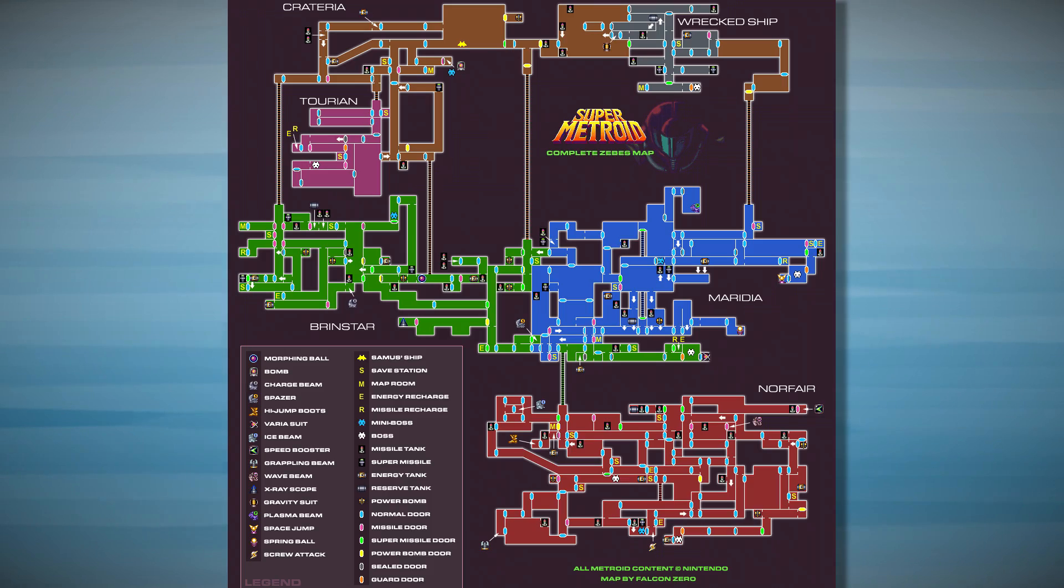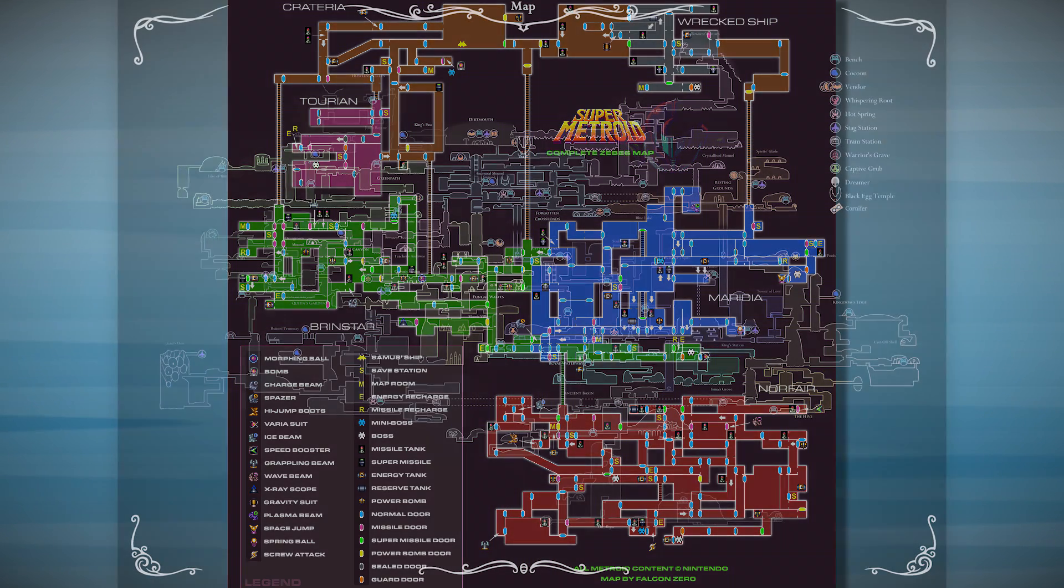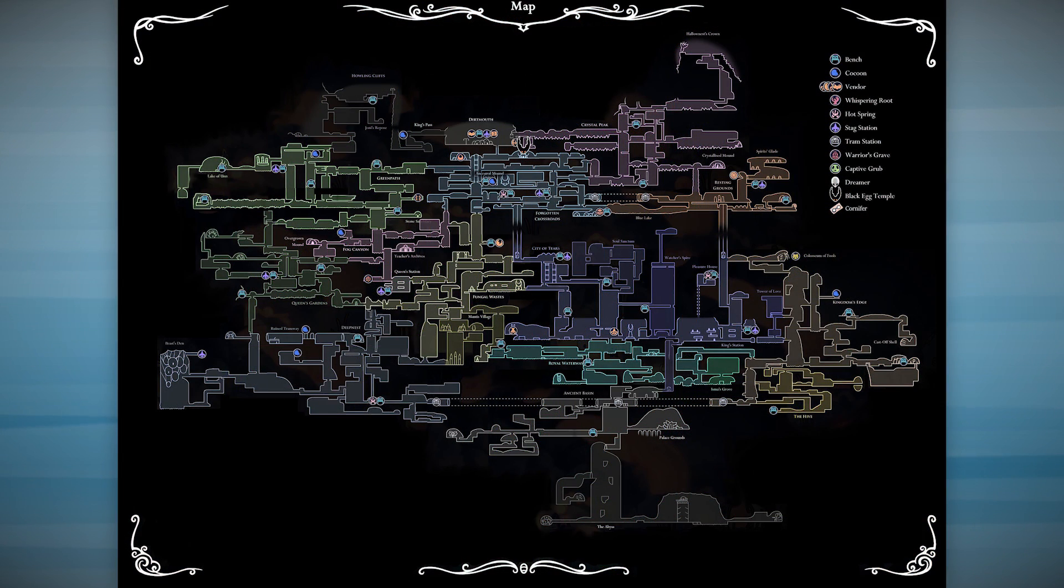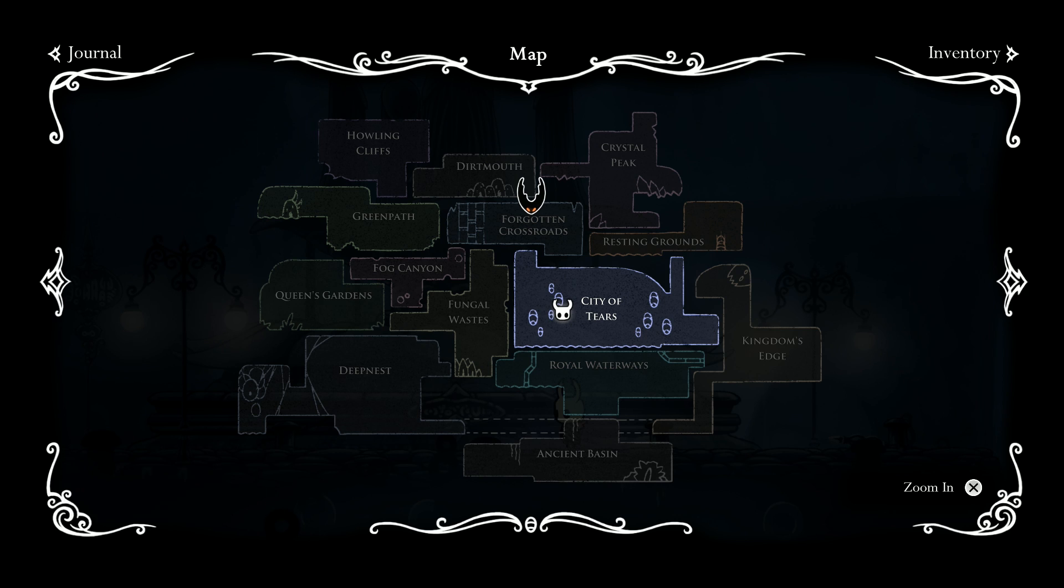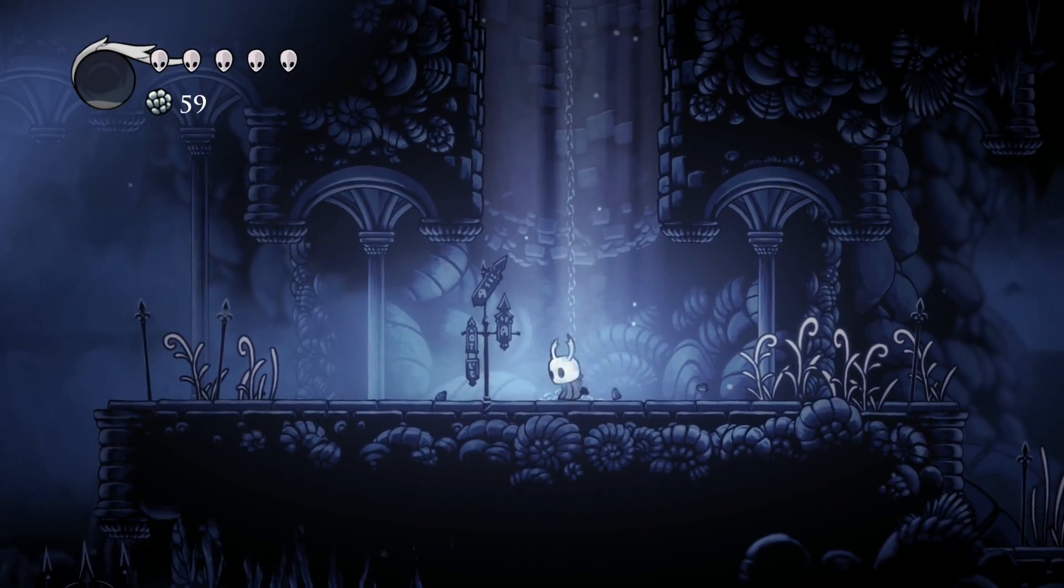One of the staples of Metroidvania-styled games are their large, sprawling, interconnected maps. Essentially, the game is all just one huge map. Sure, there are clearly defined regions, but there are so many connections between each area and different paths of progression that you won't be completing them one by one. This game necessitates backtracking.